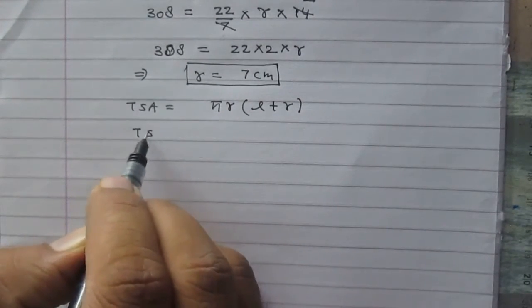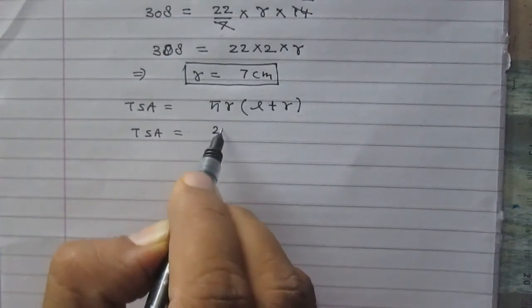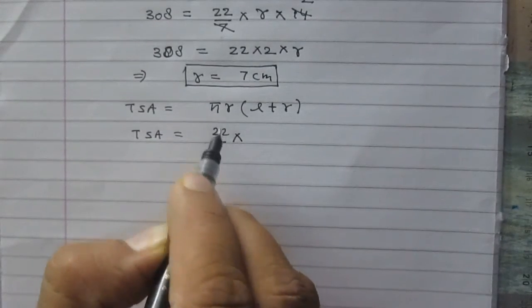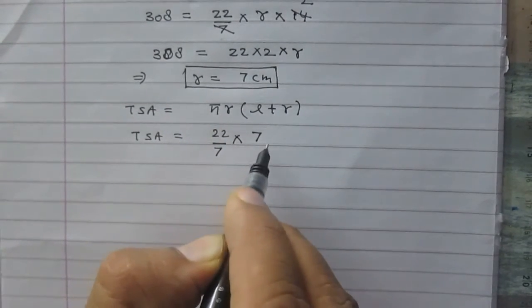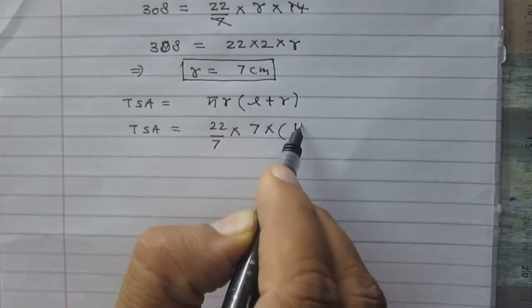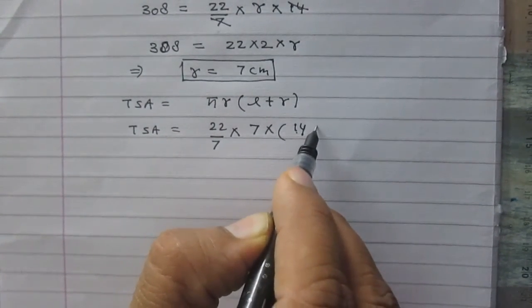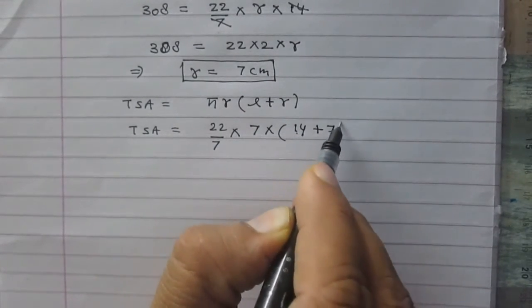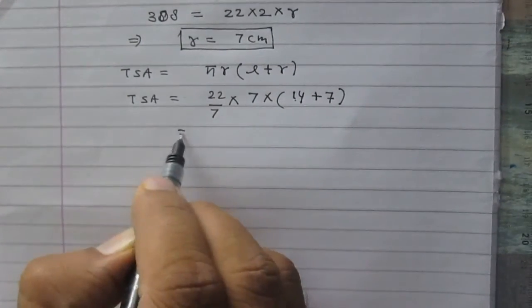Total surface area = 22/7 × R. We have found it, it is 7 cm, multiplied by the sum of L which is 14 cm and R which is 7 cm.